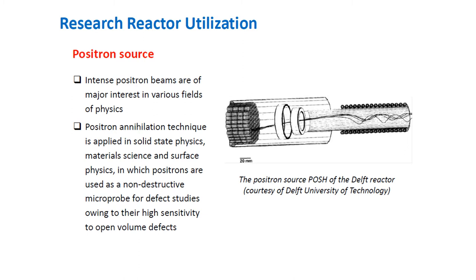High-intensity positron beams are of major interest in various fields of physics. The positron annihilation technique is applied in solid-state physics, material science, and surface physics, where positrons are used as a non-destructive microprobe for defect studies owing to their high sensitivity to open volume defects. In atomic and nuclear physics, scattering experiments with positronium and investigation of positronium excited states also require intense positron beams.